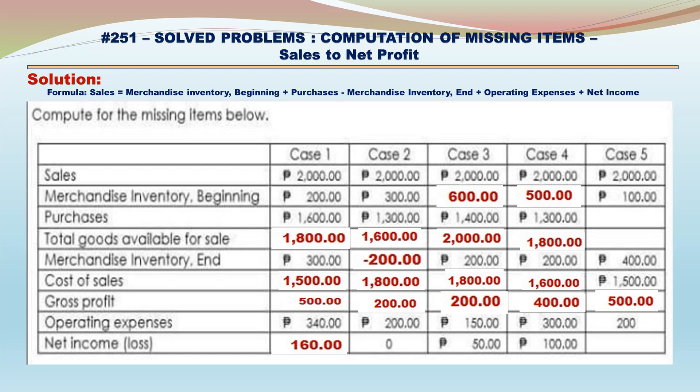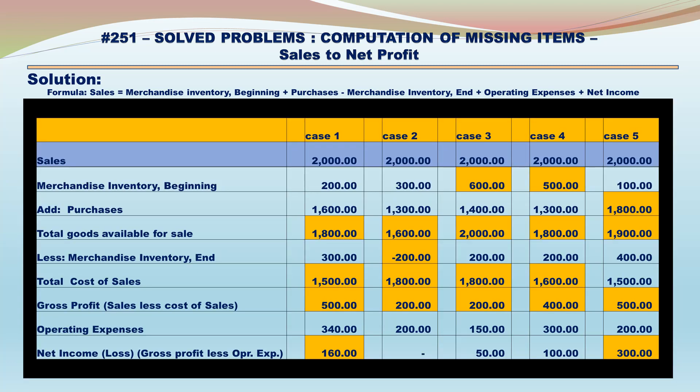Case 5: Gross Profit equals 500 — Sales 2,000 minus Cost of Sales 1,500. Net Income equals 300 — Gross Profit 500 minus Operating Expenses 200. Total Goods Available for Sale equals 1,900 — Cost of Sales 1,500 plus Merchandise Inventory Ending 400. Purchases equal 1,800 — Total Goods Available for Sale 1,900 minus Beginning Inventory 100.